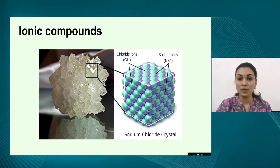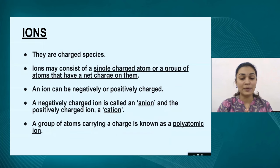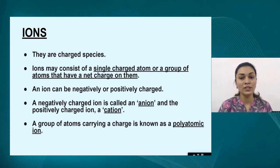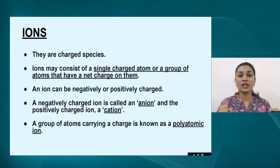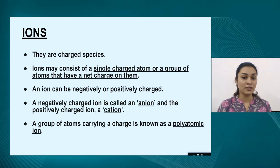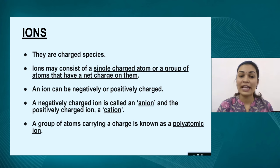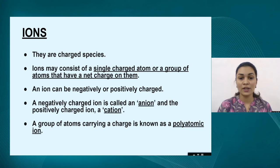Let us take the example of sodium chloride and explain how the sodium ion is formed, how the chloride ion is formed, and how they form sodium chloride. Looking at the definition of ions — they are actually charged species. They have a single charged atom or a group of atoms that have a charge on them. This charge can either be positive or negative. If the atom has a positive charge, we call it a cation. If the atom has a negative charge, we call it an anion. A single atom can have a charge, but also a group of atoms can carry a charge — when that happens, we say it is a polyatomic ion, meaning more than one atom forming a group with an overall charge.